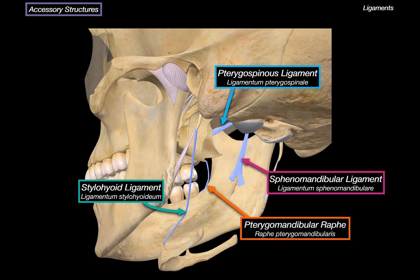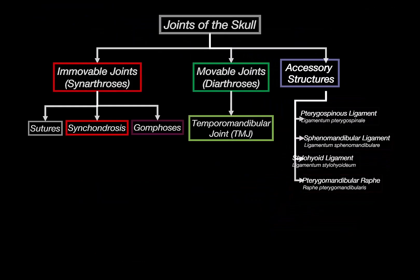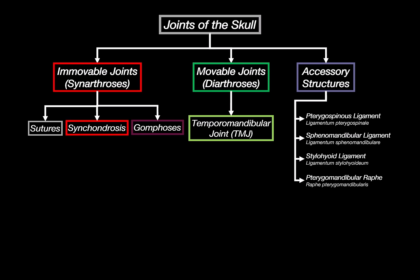It's actually a remnant of Meckel's cartilage from embryonic development. Lastly, the pterygomandibular raphe is a fibrous seam rather than a traditional ligament. It goes from the pterygoid hamulus to the posterior part of the mandible, and serves as an anchor point for two important muscles — the buccinator and the superior pharyngeal constrictor — making it important for both chewing and swallowing.